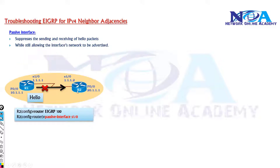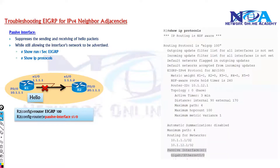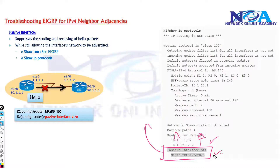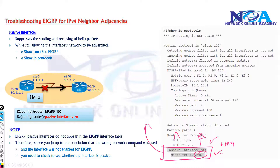To verify, you can always use the 'show run section' command because normally you will see this configuration inside your routing configurations. Even when you verify with 'show ip protocols', you will see if there are any passive interfaces enabled. You need to confirm that passive interface is not listing any of your WAN interfaces where you are supposed to form the neighbor relationship.